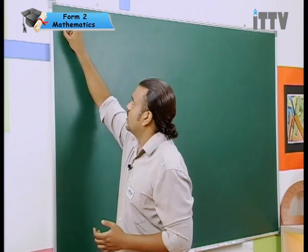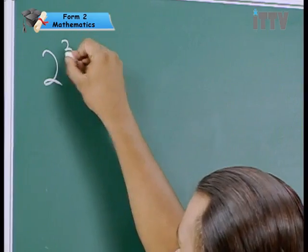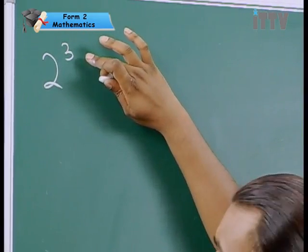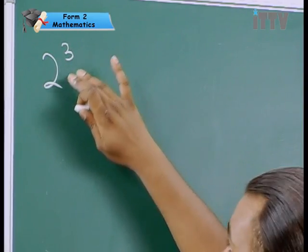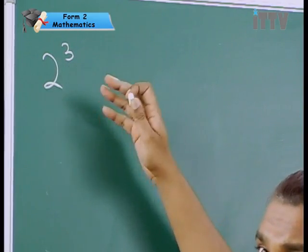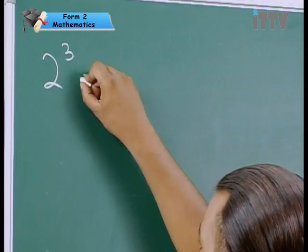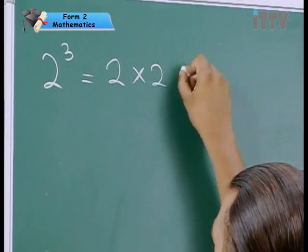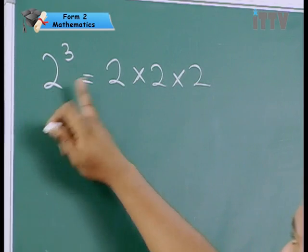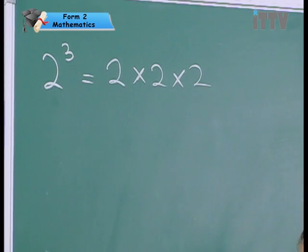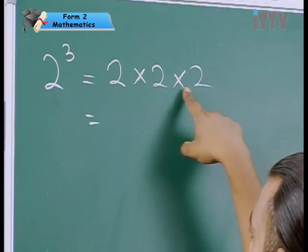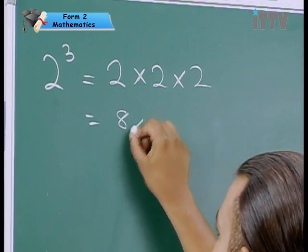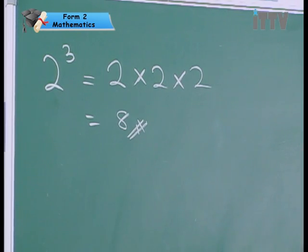Now say for example, you are given this: 2 with this little 3 here. Now what is this read as? It can be read as 2 power 3, 2 cube or the cube of 2. Now this actually means it is 2 times 2 times 2. That means the number is multiplied thrice, 3 times. Therefore, you will end up getting 2 times 2 is 4 times 2, the answer 8. Simple isn't it?